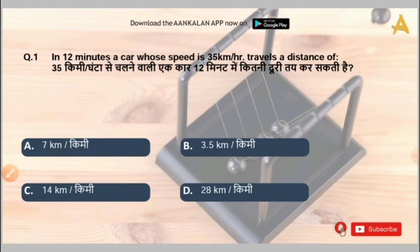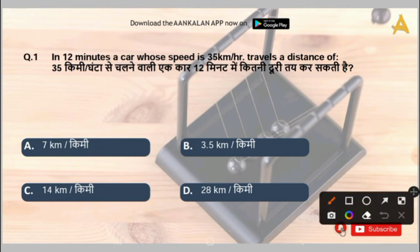The first question is: in 12 minutes, a car whose speed is 35 km per hour travels a distance of how much? So you have time given here and a distance is covered in such a time duration. You have speed and time given here, and what you have to find is the distance travelled.